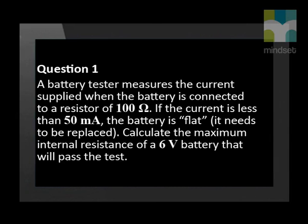A battery tester measures the current supplied when the battery is connected to a resistor of 100 ohm. If the current is less than 50 milliampere, the battery is flat. It needs to be replaced. Calculate the maximum internal resistance of a 6 volt battery that will pass the test.